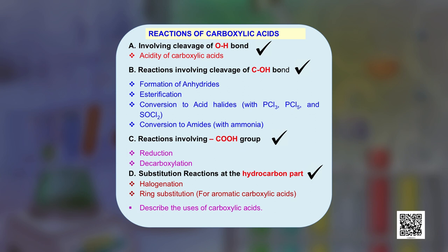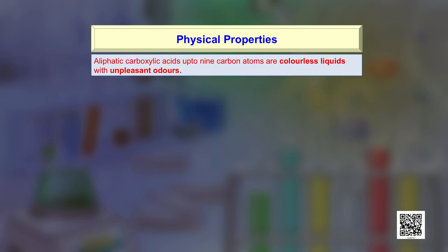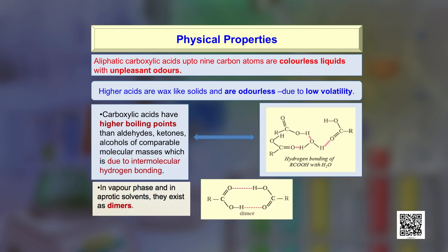Aliphatic carboxylic acids up to 9 carbon atoms are colorless liquids with unpleasant odors. Higher acids are wax-like solids and are odorless due to their low volatility. Carboxylic acids have higher boiling points than aldehydes, ketones, or alcohols of comparable molecular masses, due to intermolecular hydrogen bonding. In vapor phase and in aprotic solvents, this hydrogen bonding plays an important role and the molecules exist as dimers.